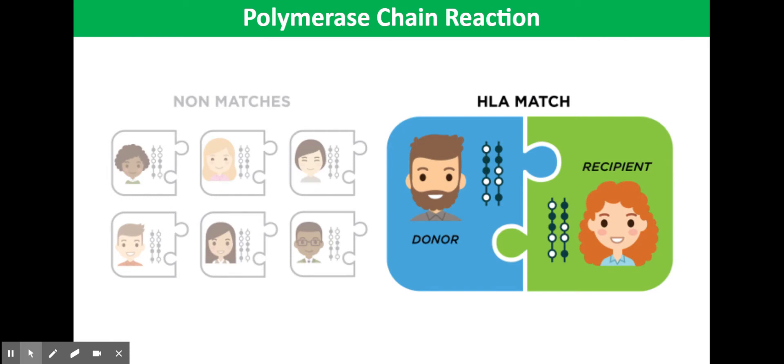The first is tissue typing. Donor and recipient tissues can be typed prior to transplantation to reduce the risk of rejection of the transplants.